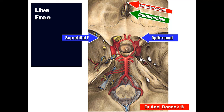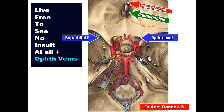This is the superior orbital fissure. It transmits from above downward: branches of the ophthalmic nerve, trochlear nerve, oculomotor nerve, ophthalmic veins, and the abducent nerve. Remember: lacrimal, frontal, and trochlear nerves run outside the tendinous ring; the others run inside it.